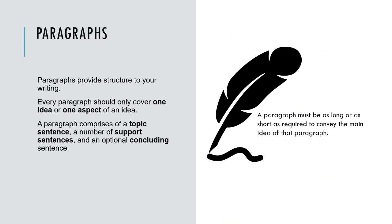A paragraph is generally defined as a group of related sentences in which one single main idea is developed, and paragraphs provide structure to your writing. Every paragraph should only cover one idea or one aspect of an idea. For example, for risk factors for intimate partner violence, you might look at community level factors in one paragraph, then structural factors like poverty and unemployment in another, or individual level factors such as psychological and mental health issues, or relationship level factors within the household. You structure your literature review according to perhaps a systems perspective, with a flow within the different subsections you create.